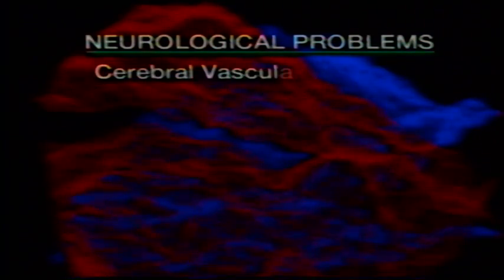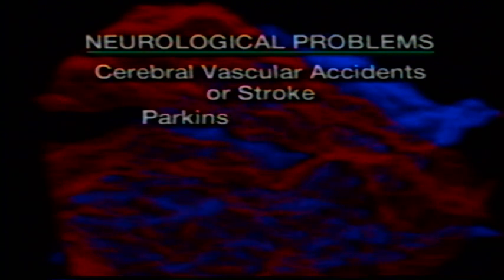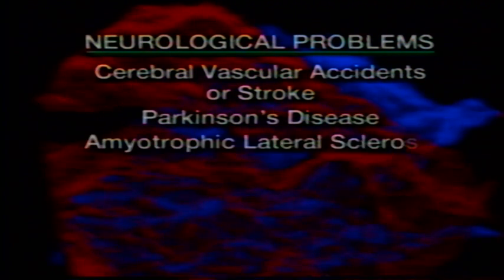Neurological swallowing problems are the most common. A neurological swallowing problem is any disturbance in the neuromuscular system that affects the normal swallowing process. Symptoms may include muscle weakness or uncoordinated or inaccurate muscle movement. Neurological swallowing problems are associated with many different common ailments, including cerebral vascular accidents or stroke, Parkinson's disease, amyotrophic lateral sclerosis or ALS, and myasthenia gravis.